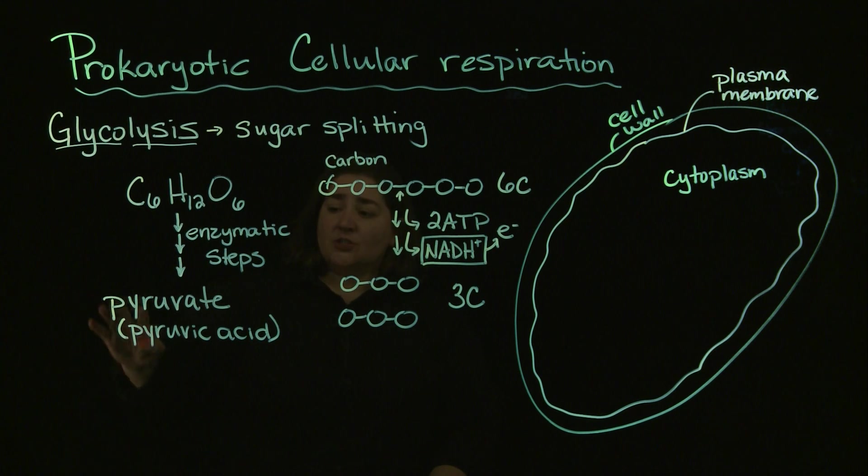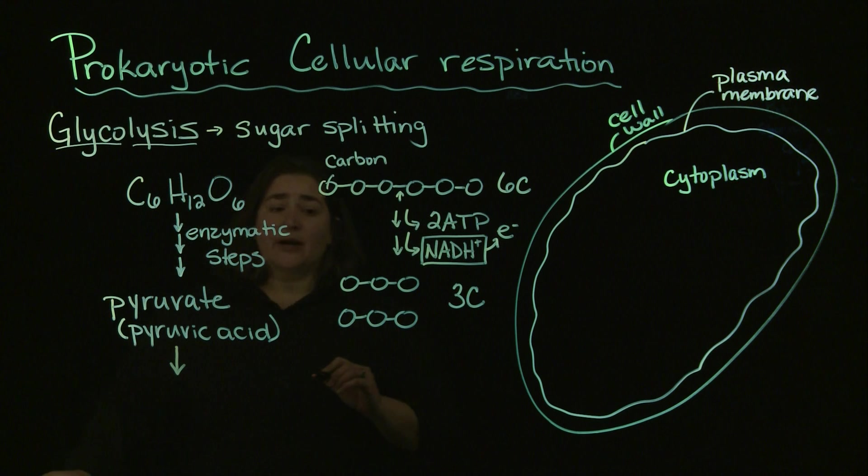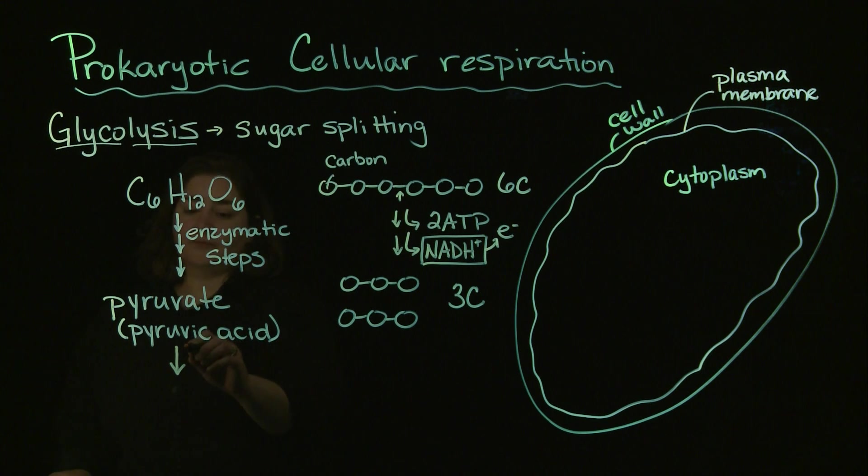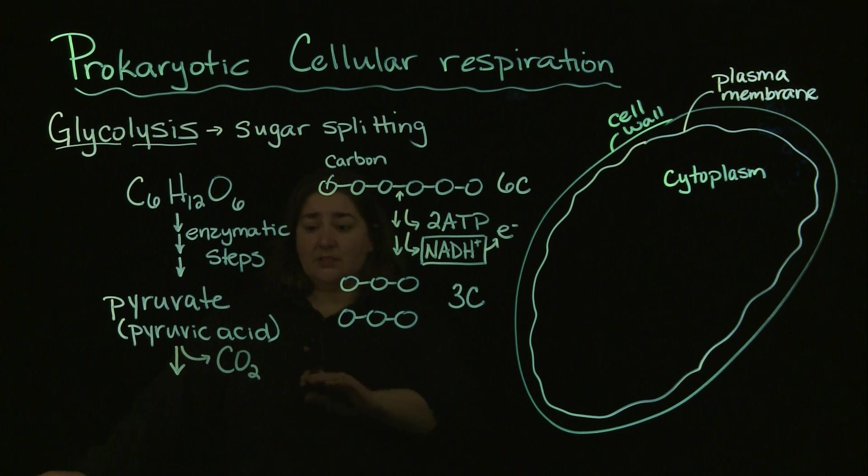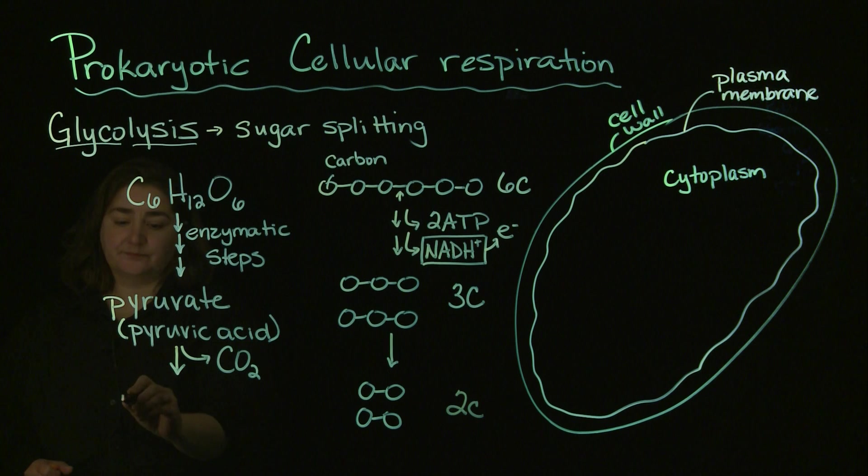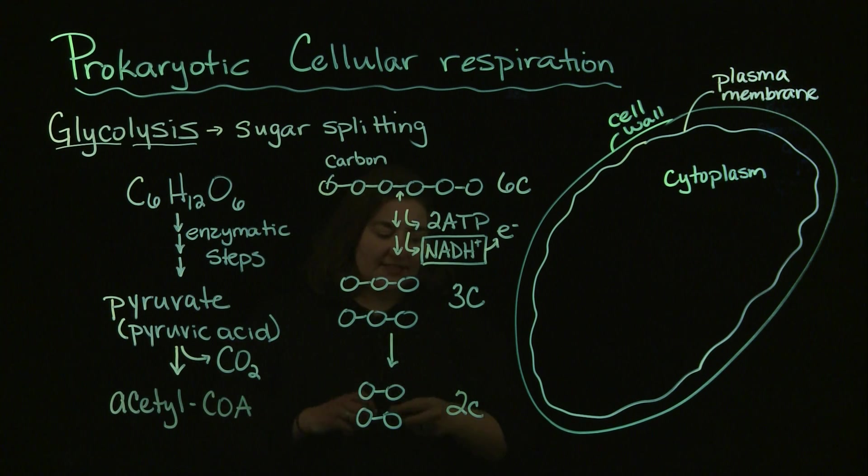So we go from our six carbon sugar to our three carbon pyruvate. We've got another step that's going to happen here. That pyruvate is going to be further broken down. One of the products you're going to generate as part of this is going to be some carbon dioxide. We're going to go from that three carbon chain now to a two carbon chain. That two carbon chain is going to be what's going to start our Krebs cycle. That two carbon chain is going to be our acetyl CoA.